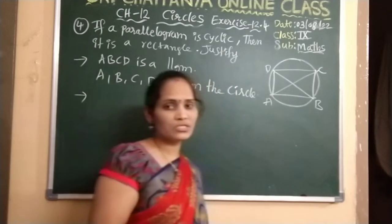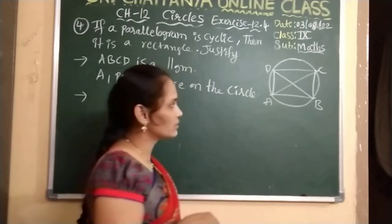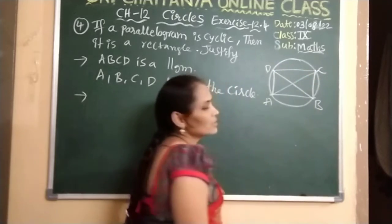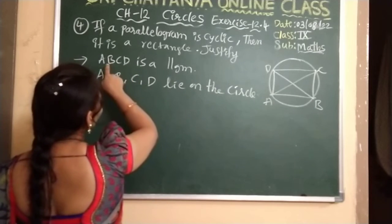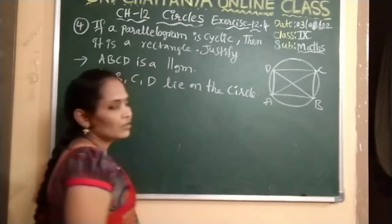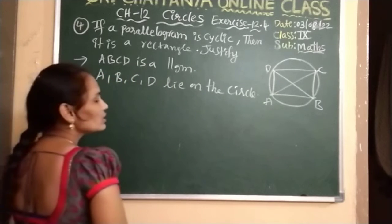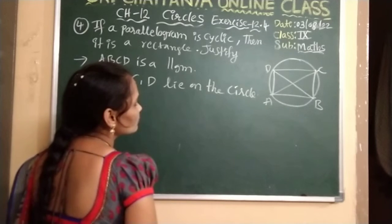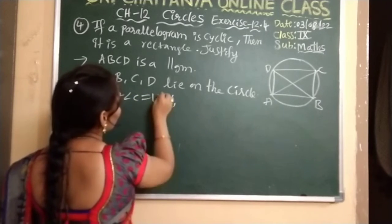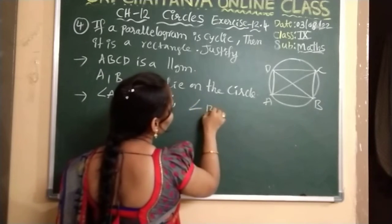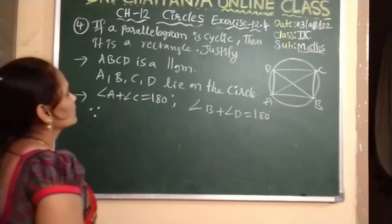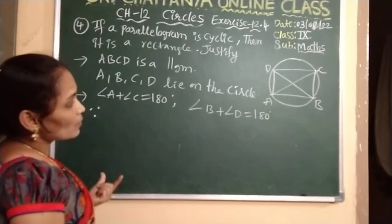Cyclic — it is a cyclic parallelogram, meaning that the parallelogram will lie on a circle. So take a circle and draw parallelogram ABCD, where AC and BD are the diagonals. From the figure, what we know: ABCD is a parallelogram and A, B, C, D all lie on the circle. Angle A plus angle C equals 180, and angle B plus angle D equals 180. Why? Because in a cyclic parallelogram, the sum of opposite angles is 180 — they are supplementary.